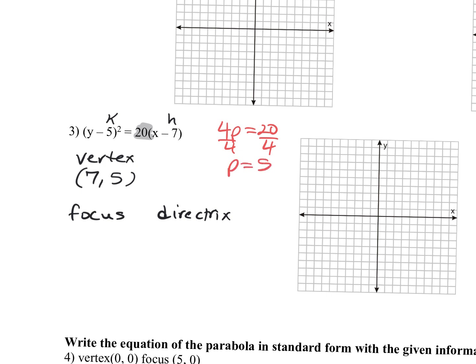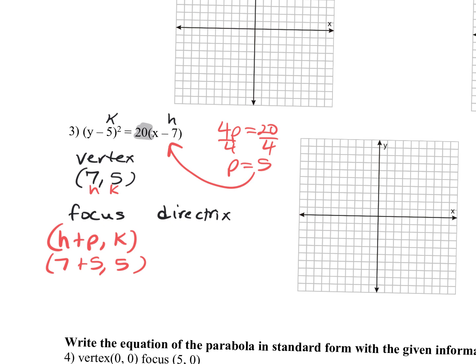In order to get your focus point, you're adding p to the non-squared variable. My non-squared variable is x. So I'm going to do h plus p, comma k. Because this is h and this is k — so 7 plus 5, comma 5. My focus is the ordered pair (12, 5).